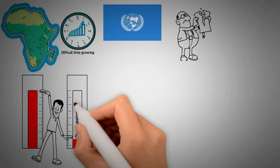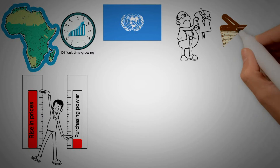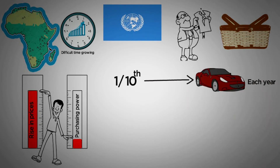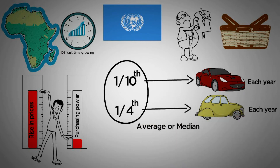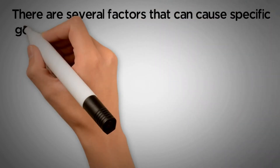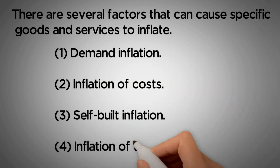The loss of purchasing power is displayed as a general rise in prices — general rise, not just specific goods and services. For instance, when calculating inflation, there's a good chance you will use what is called a basket of goods. If one in ten households will buy a new car each year, and one in four households will buy a used car each year, then you might use one-tenth and one-quarter of the average or median price of new or used cars in your basket of goods. When you compare these numbers on a diversified basket of goods from year to year, you can get a sense of the rate of inflation. There are several factors that can cause specific goods and services to inflate: demand inflation, inflation of costs, self-built inflation, and inflation of the monetary base.